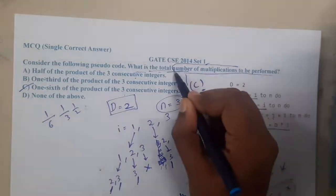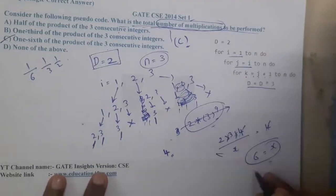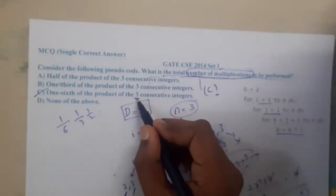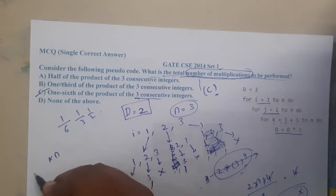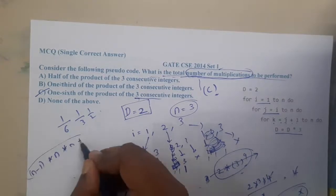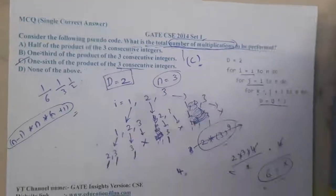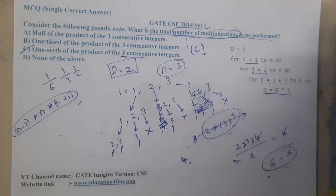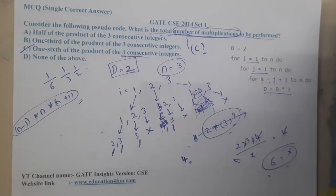Basically they are not asking the exact value but they are asking the total number of multiplications. With this simple analysis we have found it. The thing here is three consecutive numbers means n into n minus 1 into n plus 1. So these are the three consecutive numbers which he means. Now you got some clear idea right, exactly how he is framing the question and how we need to solve the question.